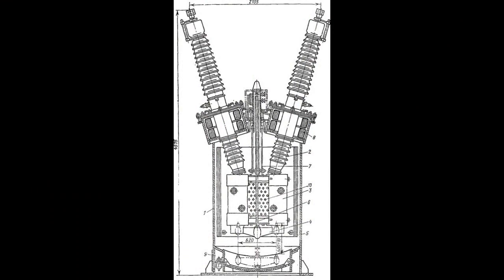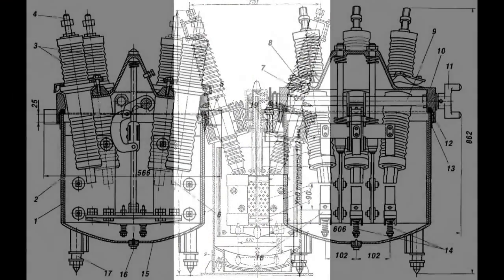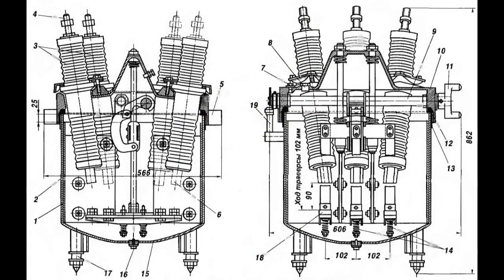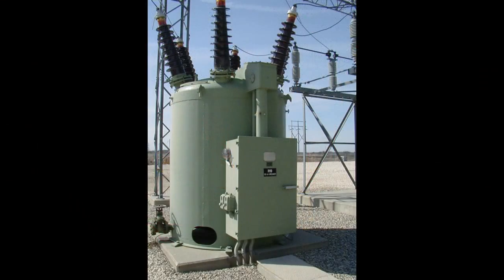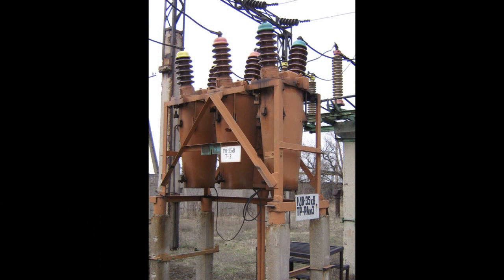Manually or remotely operated single-tank circuit breakers are used at voltages ranging from 3 to 20 kV. Automatically or remotely operated three-tank ones are used at voltages of 35 kV. The latter also have an automatic reclosing function.